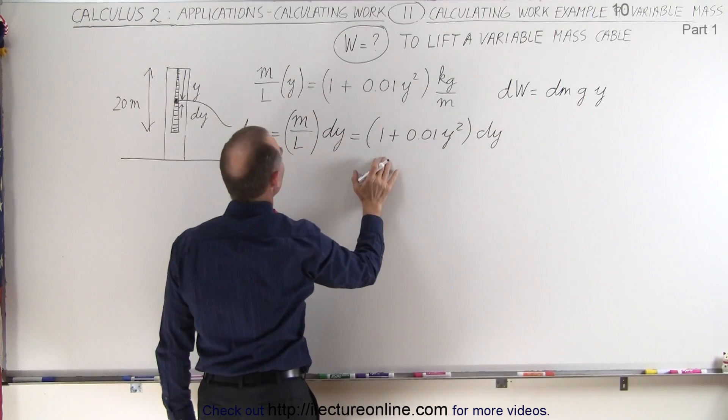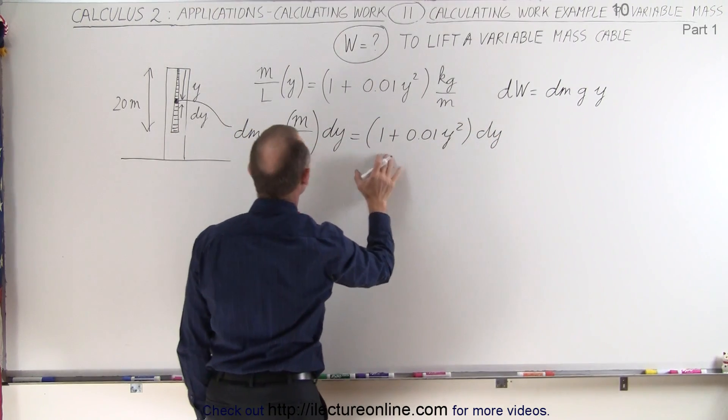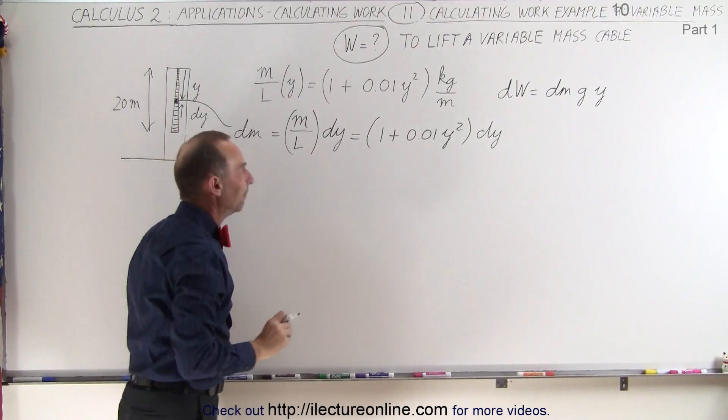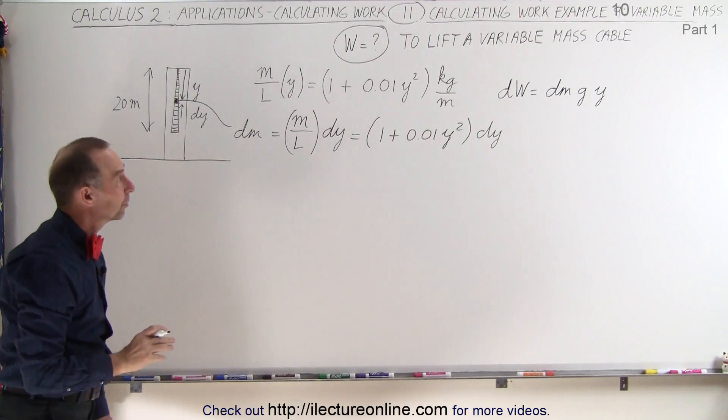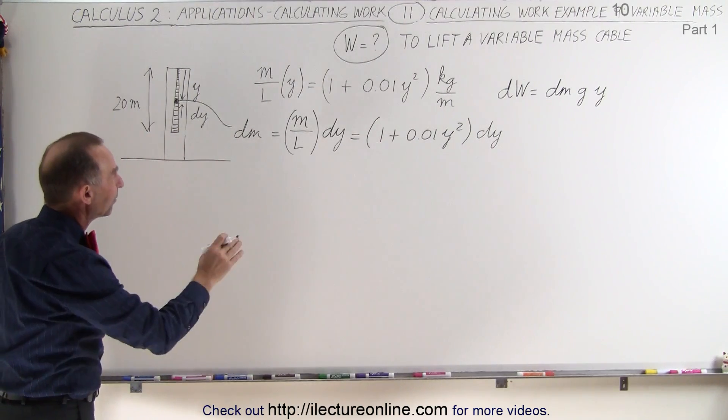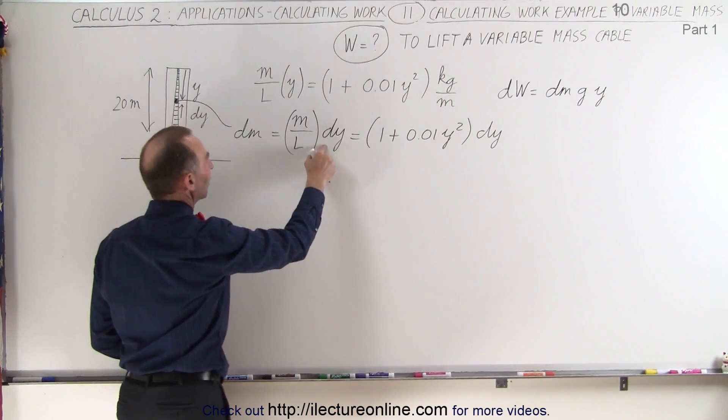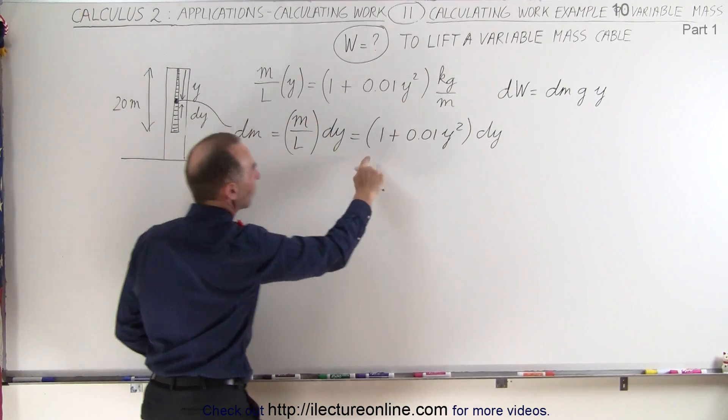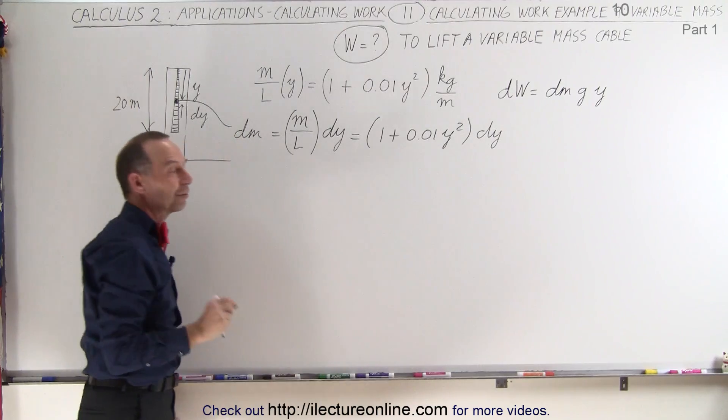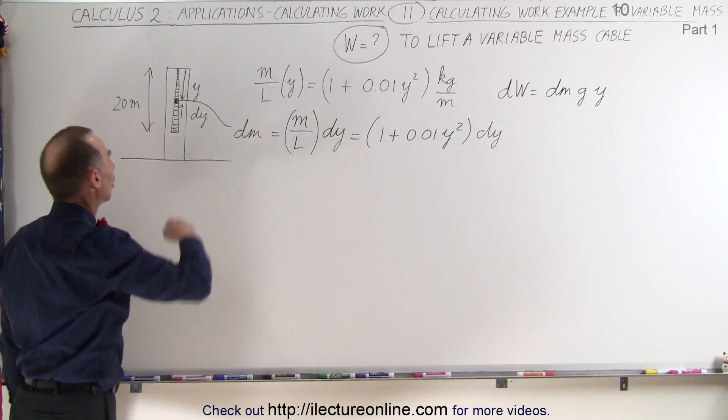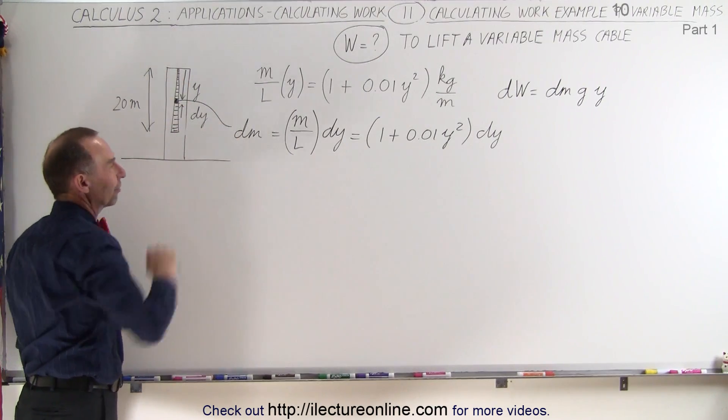And that will then be defined as dm. So it's mass per unit length times dy. So mass per unit length times length. The lengths cancel. We end up with mass. And that's how the mass is defined for any small section along the cable as a function of y.